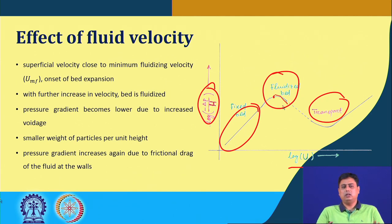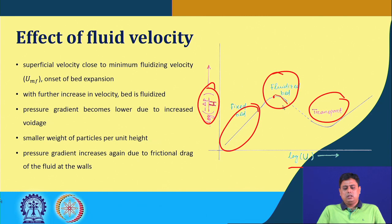At a certain point the whole bed is fluidized, and then we enter the transport region where particles are being carried with the fluidizing fluid. In between, the pressure gradient — pressure drop per unit length — decreases due to the increase in voidage. The bed now has a smaller weight of particles per unit height.